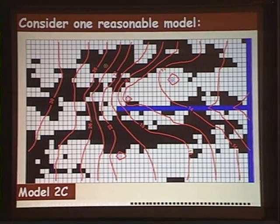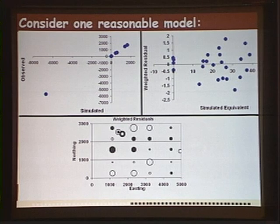Let's consider one reasonable model, Model 2C. It's already been calibrated and run in predictive mode, generating the hydraulic head contours you see here. It's a simple model with just two zones of hydraulic connectivity, a high and a low. When we ask is the model reasonably calibrated, we usually look at observed versus simulated, which should fall on a 45-degree line. That looks great, though it doesn't always reveal problems. It's better to look at weighted residuals versus simulated equivalents.